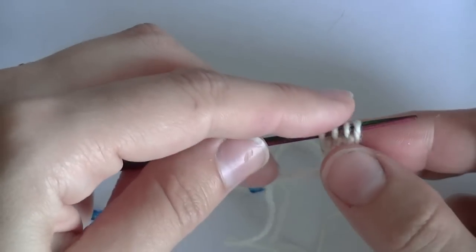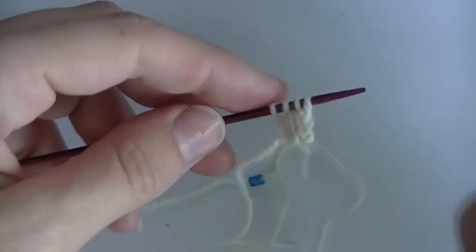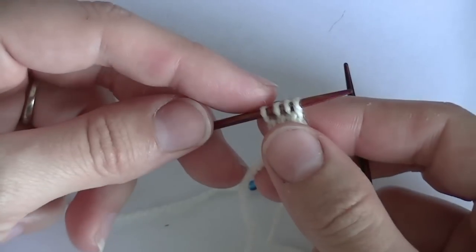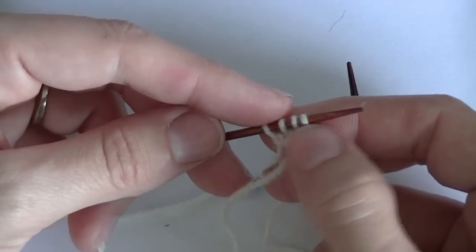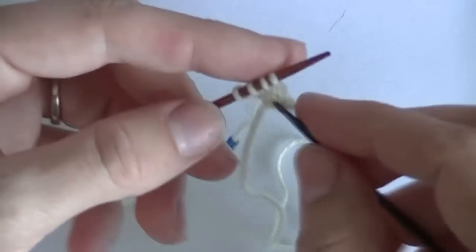I'm knitting it right now into an I-cord, but you would use this same technique for knitting it into a project that was regular knitting that called for slipping and knitting the beads on.